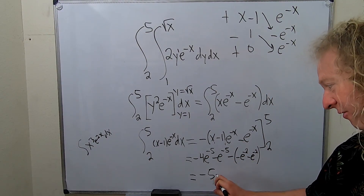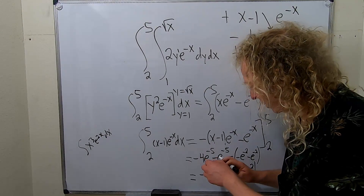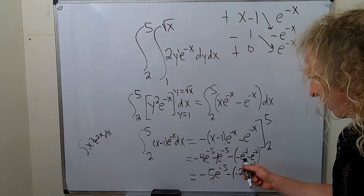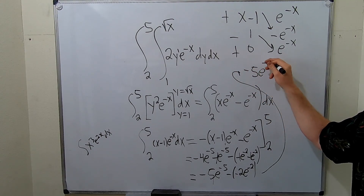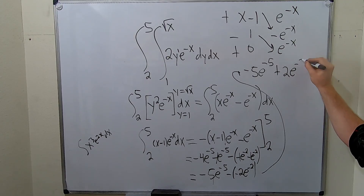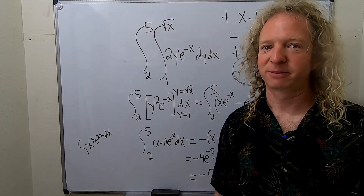Tabular applies whenever you can use integration by parts and one of the pieces eventually reaches zero after repeated differentiation. For x minus 1, the derivative is 1, and then 0. For e to the negative x, you keep integrating, dividing by the coefficient negative 1 each time: first negative e to the negative x, then positive e to the negative x. You assign alternating signs starting with plus: plus, minus, plus, then draw the diagonal arrows.